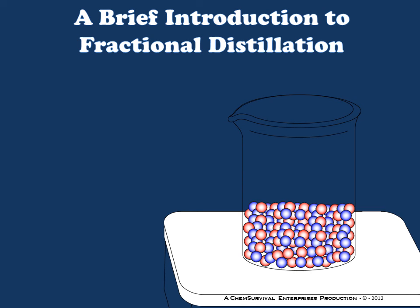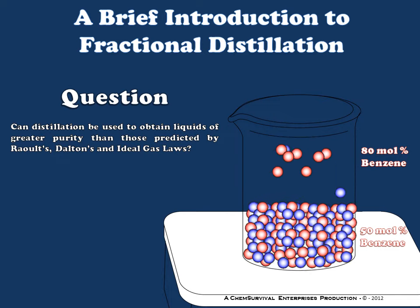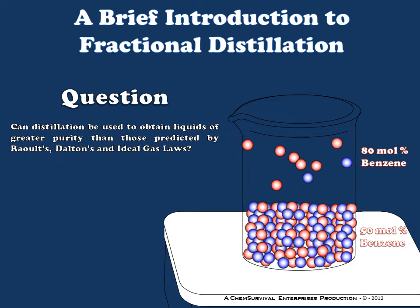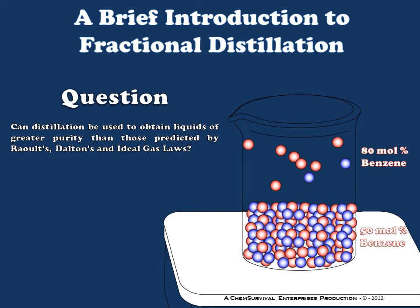Welcome to a brief introduction to the principles behind fractional distillation. We're going to begin with a question based upon one of our earlier discussions — the simple distillation lecture, which you may want to view if you haven't yet. The question we'll be asking is: can distillation be used to obtain liquids of greater purity than those predicted by Raoult's, Dalton's, and Ideal Gas Laws? In other words, can we achieve a higher purity of benzene in a distillate beyond our 80 mole percent example?